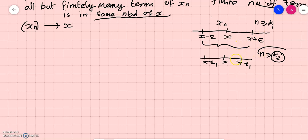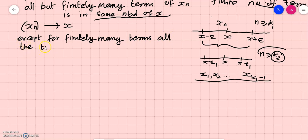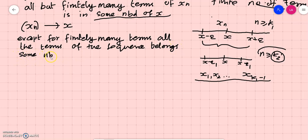So except for finitely many terms — in this case except for x1, x2, up to xk1 minus 1 — all other terms belong to this interval. That is what I have explained: except for finitely many times, all the times of the sequence belong to some neighborhood of x. This is what convergence actually means.